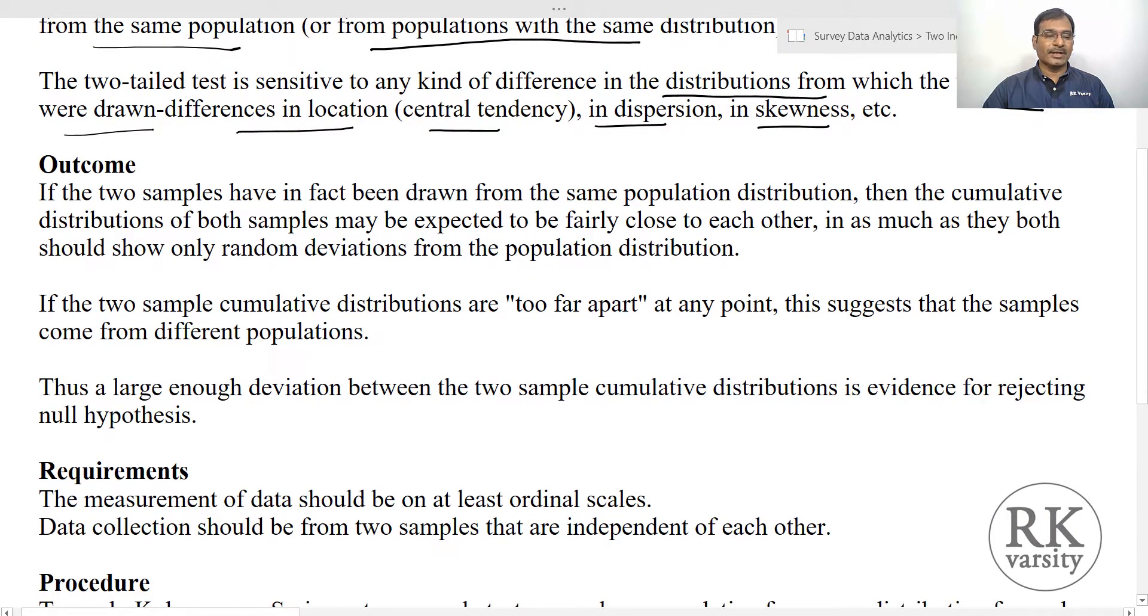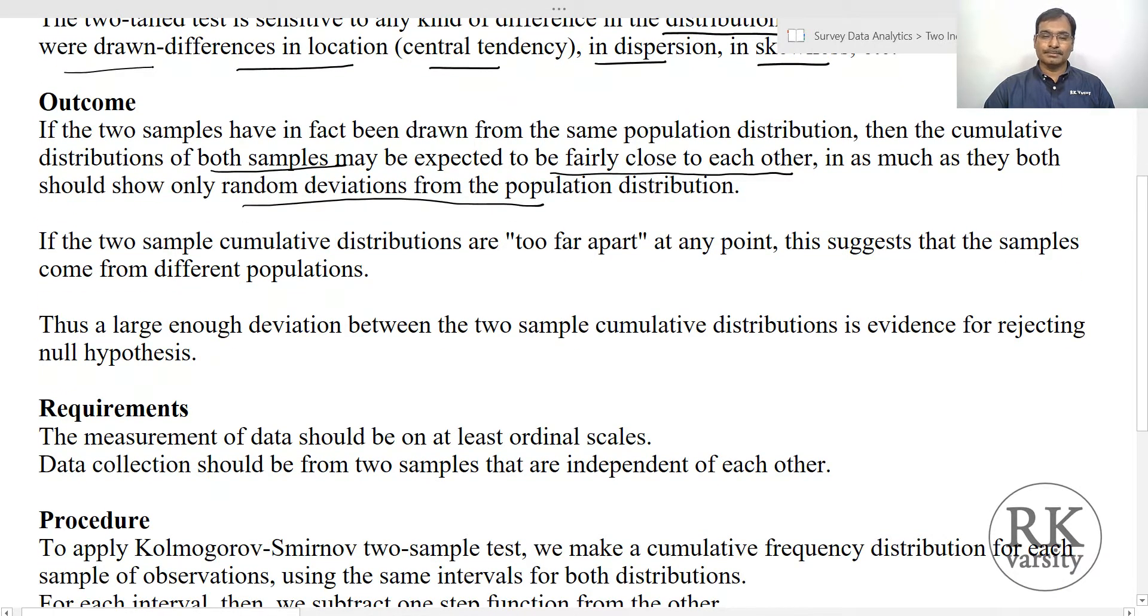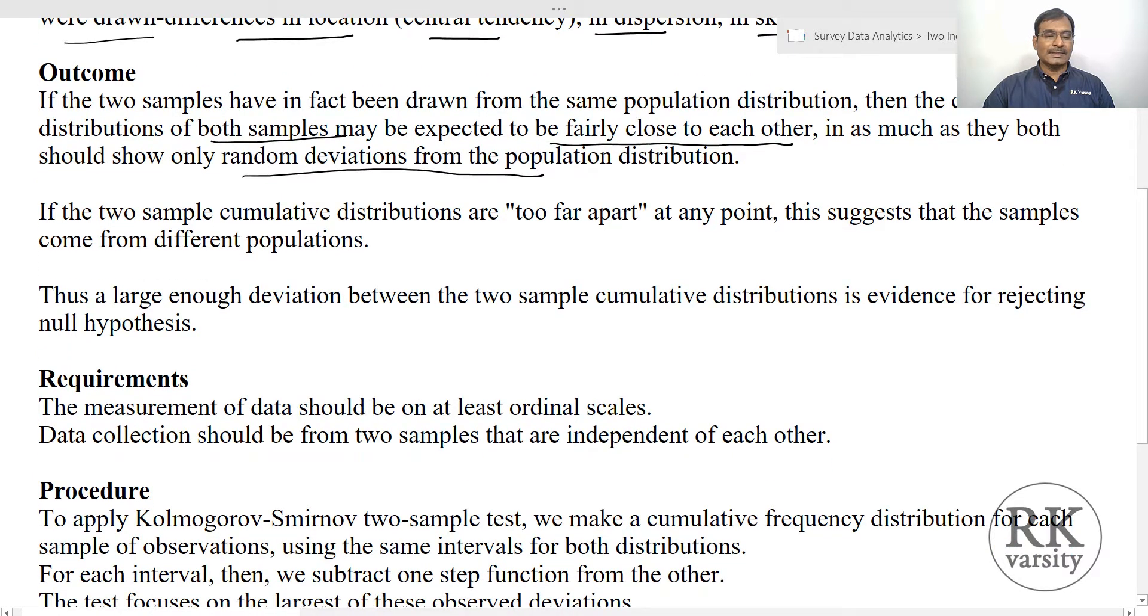The outcome of the KS test for two independent samples is that if two samples have in fact been drawn from the same population distribution, then the cumulative distribution of both samples may be expected to be fairly close to each other, in as much as they both show only random deviations from the population distribution. If the two cumulative distributions are too far apart at any point, this suggests that the samples come from different populations.